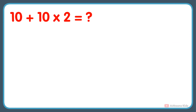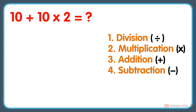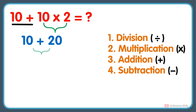What is 10 plus 10 multiplied by 2? In this problem, two operations — addition and multiplication — are given. So according to the order, we would first perform the multiplication: 10 multiplied by 2 gets 20. And next, add 10 to the result, and you will get your answer: 20 plus 10 is 30.